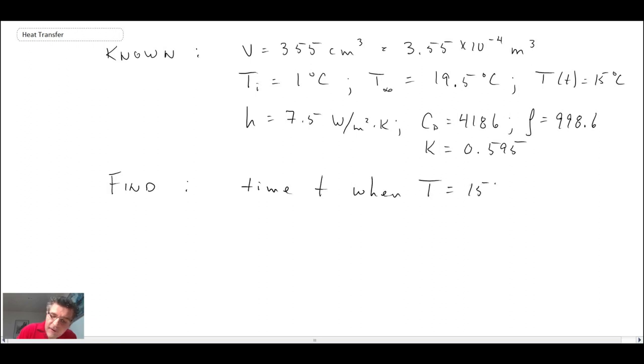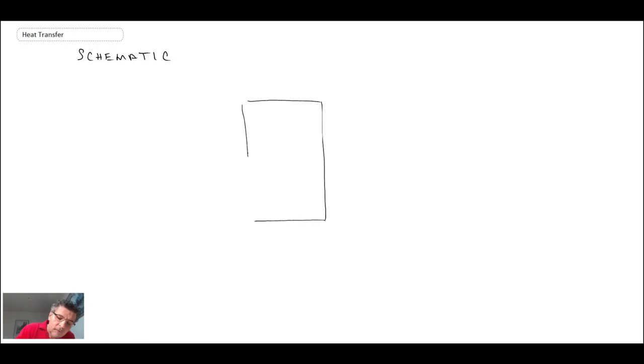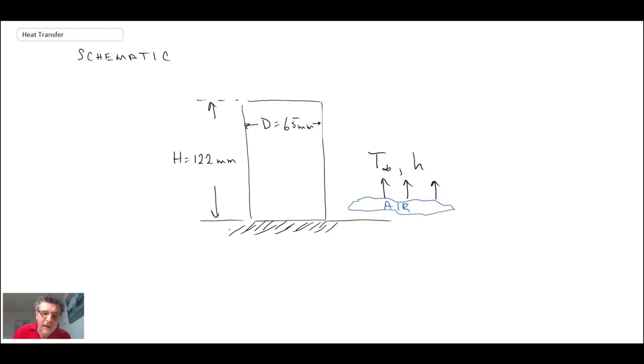Let's draw a schematic. I'm going to assume the can is placed on an insulating material at the base. This is our can of soda pop taken out of the fridge and placed on a table with an insulating base, so we assume there's no heat transfer from the bottom.